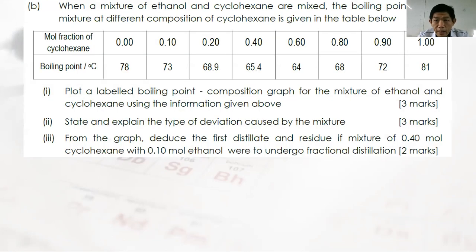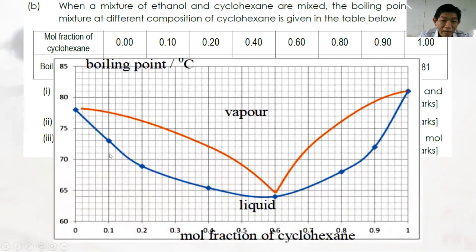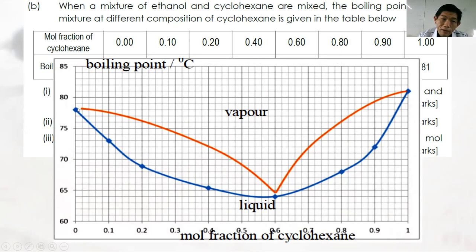Essay Question 2B: When ethanol and cyclohexane are mixed, the boiling point at different compositions is given in a table. Plot a labeled boiling point composition graph. When plotted, the curve shows a minimum boiling point — indicating positive deviation. Label the axes, join the data points, and label the azeotropic minimum on the curve.